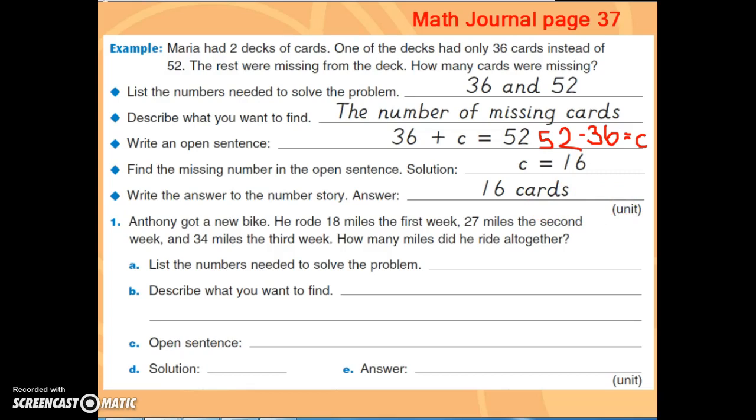Let's go ahead and take a look at number one together. Again, this is in your math journal on page 37. Anthony got a new bike. He rode 18 miles the first week, 27 miles the second week, and 34 miles the third week. How many miles did he ride all together?